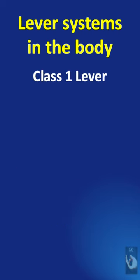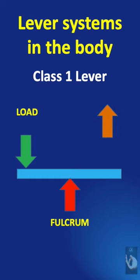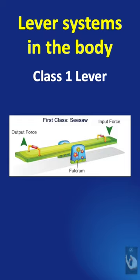In class 1 lever, the fulcrum is in the center, load is applied on one end and the resultant force is on the other end. An example is the seesaw.